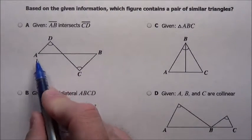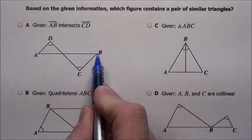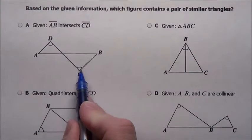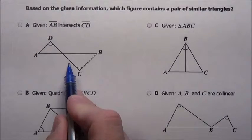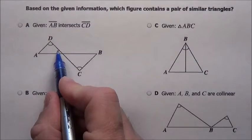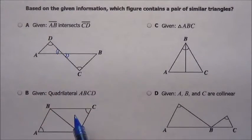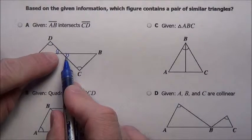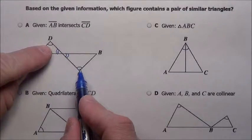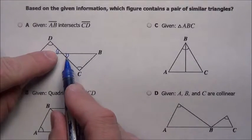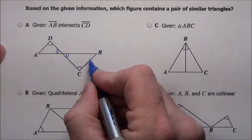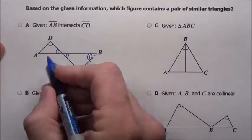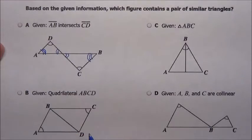Choice A. Given segment AB intersects segment CD. They intersect, and it also tells me that one angle and another angle are equal. Well, if they intersect one another, this angle and this angle are vertical angles, and they match. So I've got these angles matching and those angles matching.